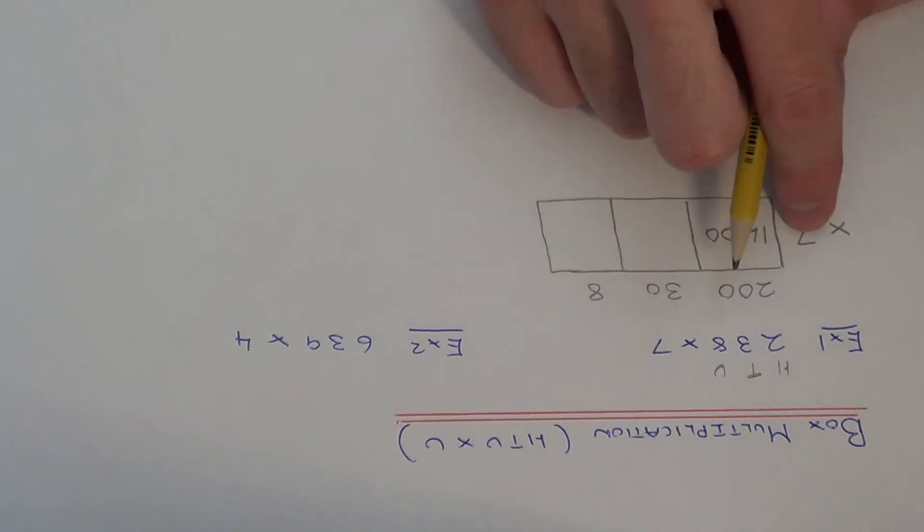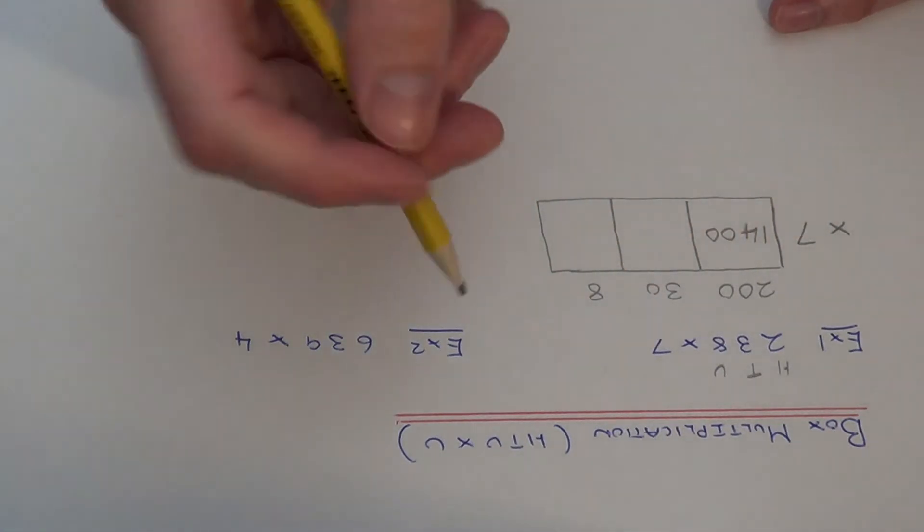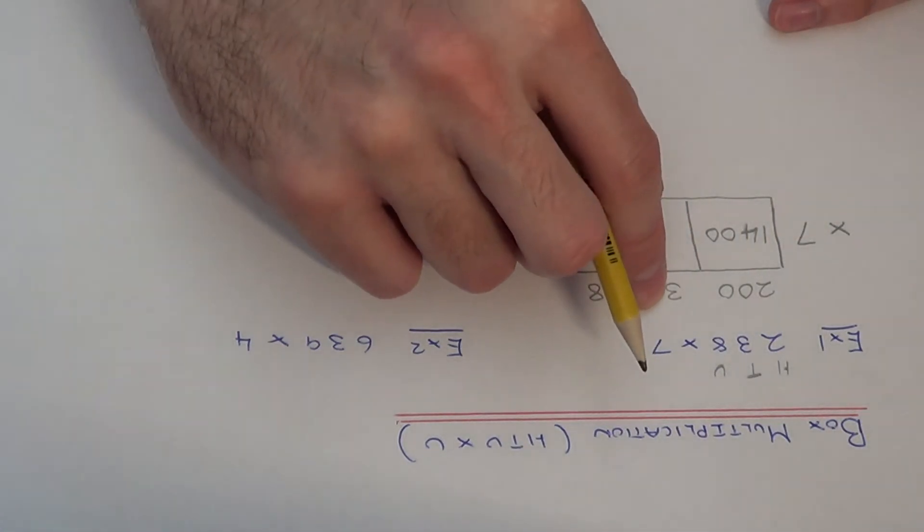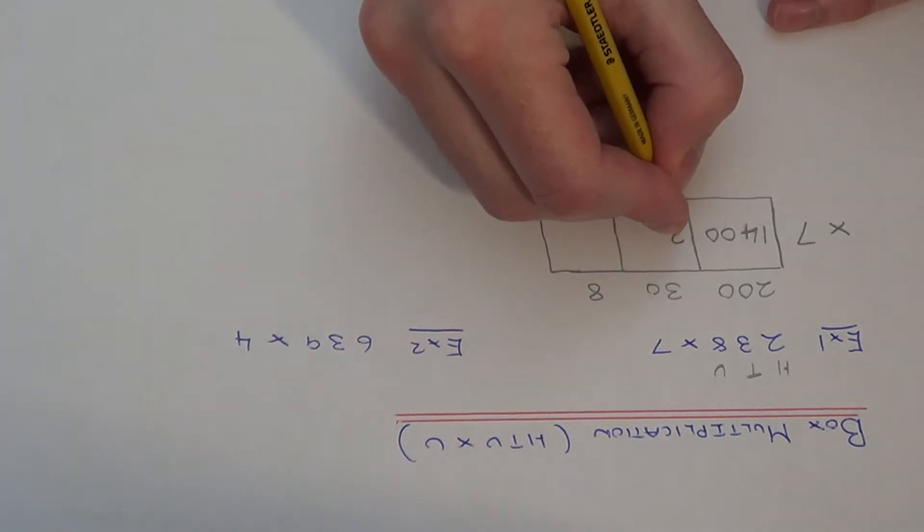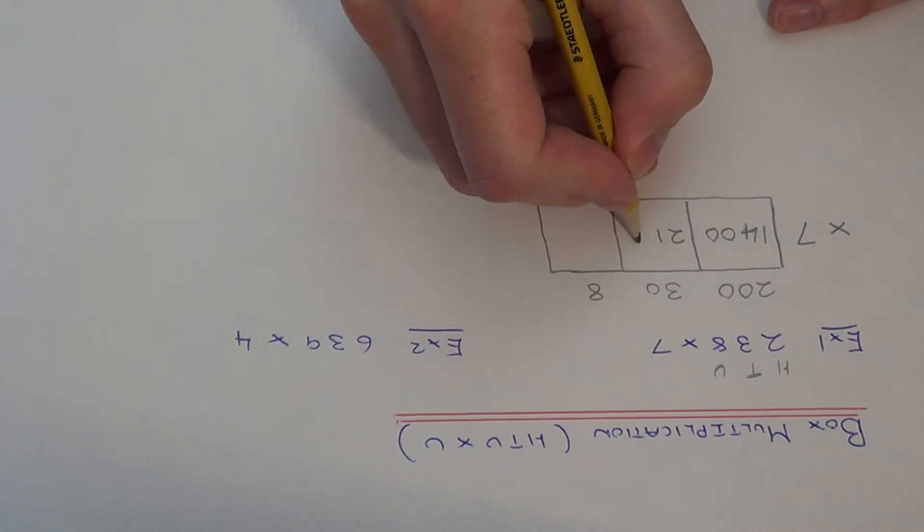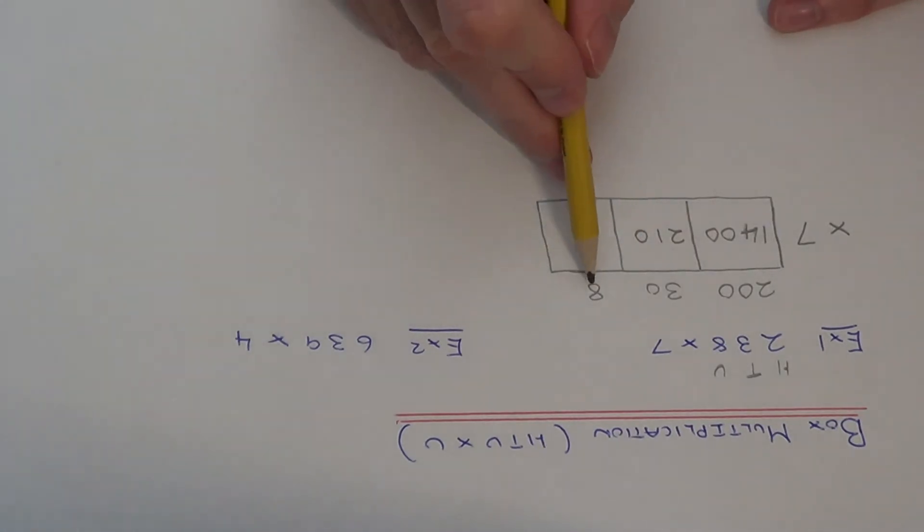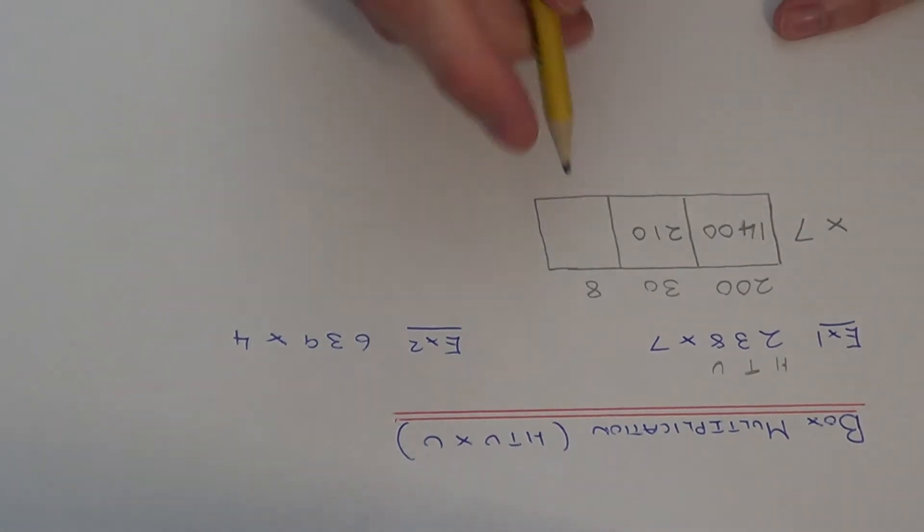In our next box we've got 30 times 7. Again, to make things easier, cover up the zero and just work out 3 times 7 which is 21. I've covered up one zero so add that back on. In our final box we've got 8 times 7 which is 56.